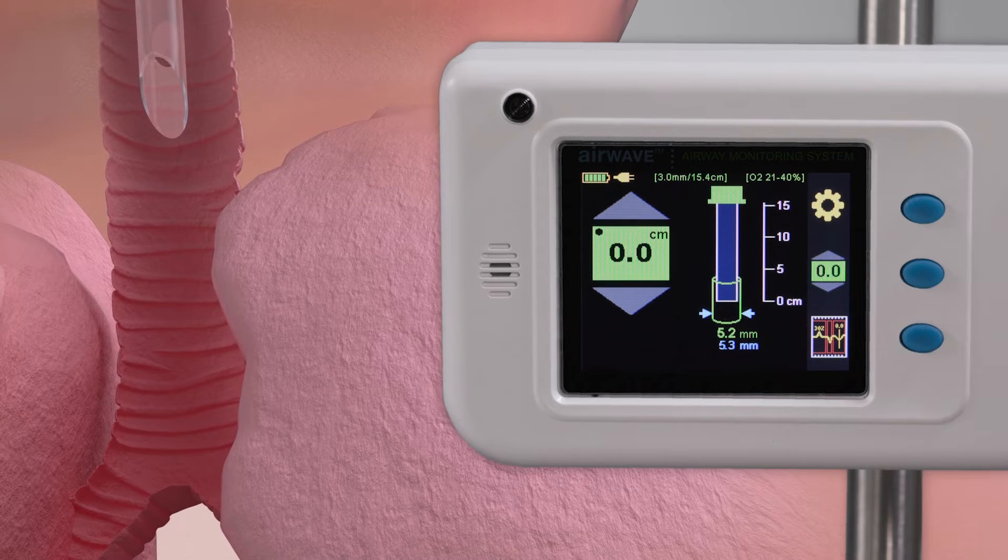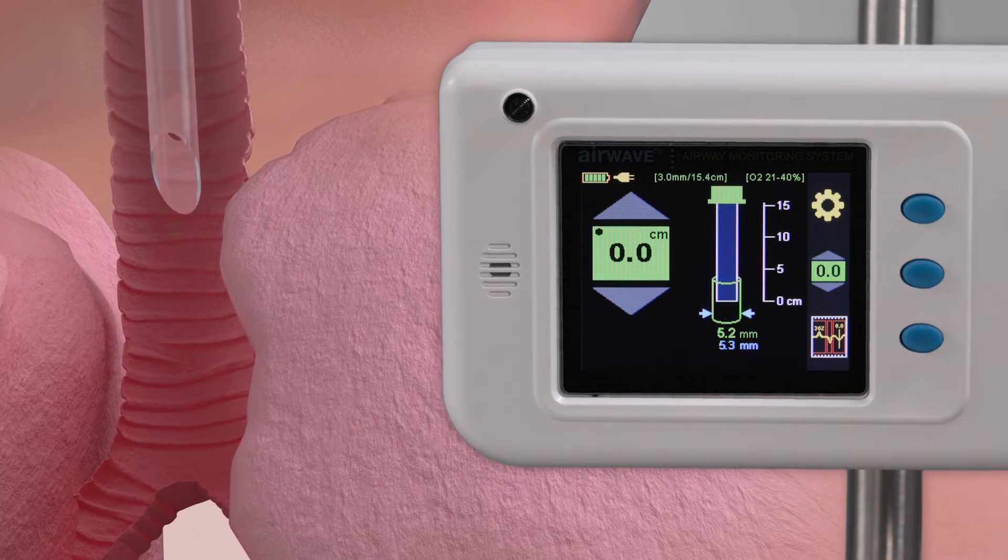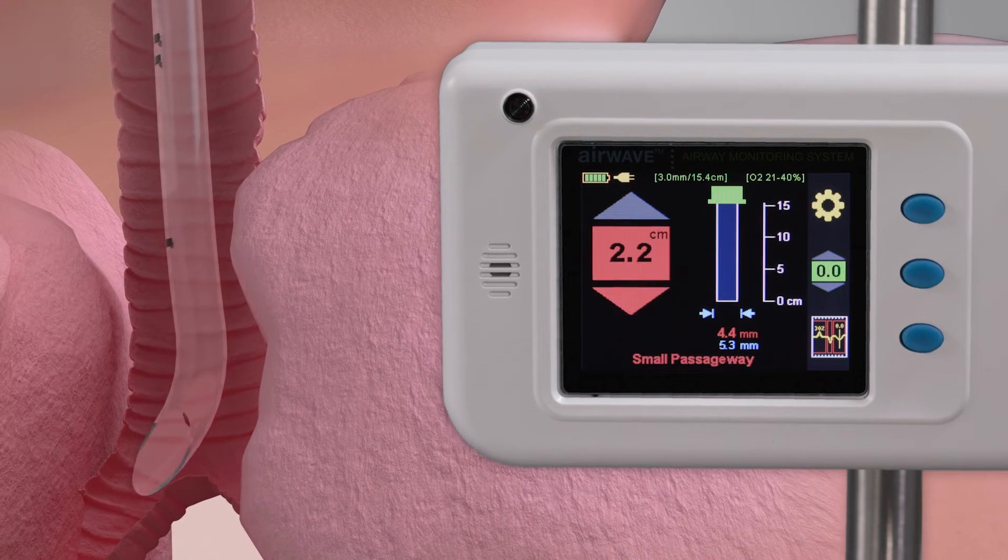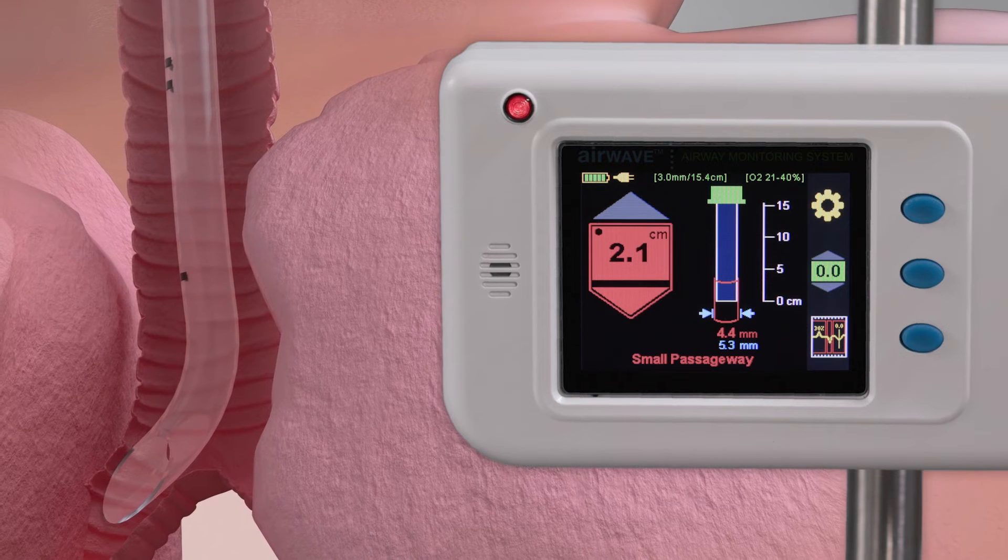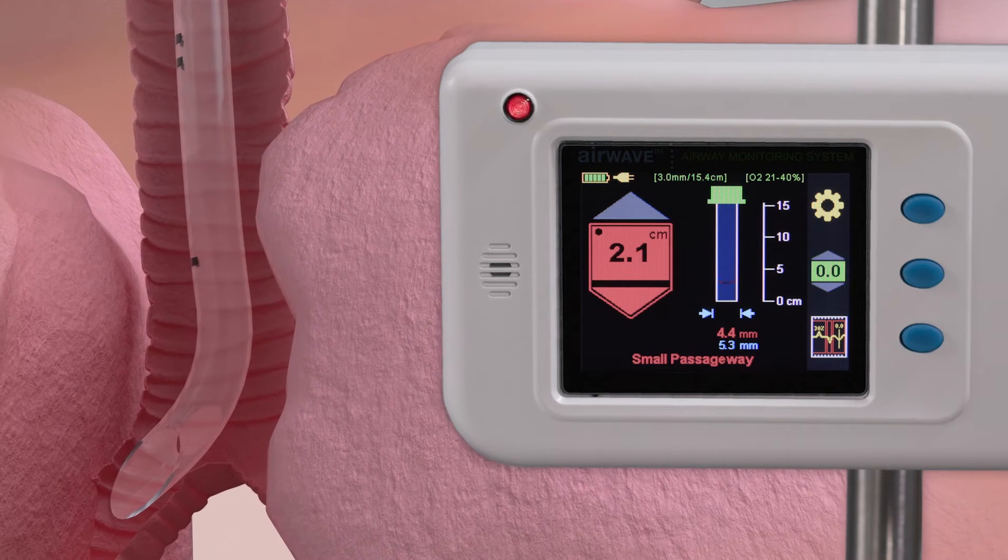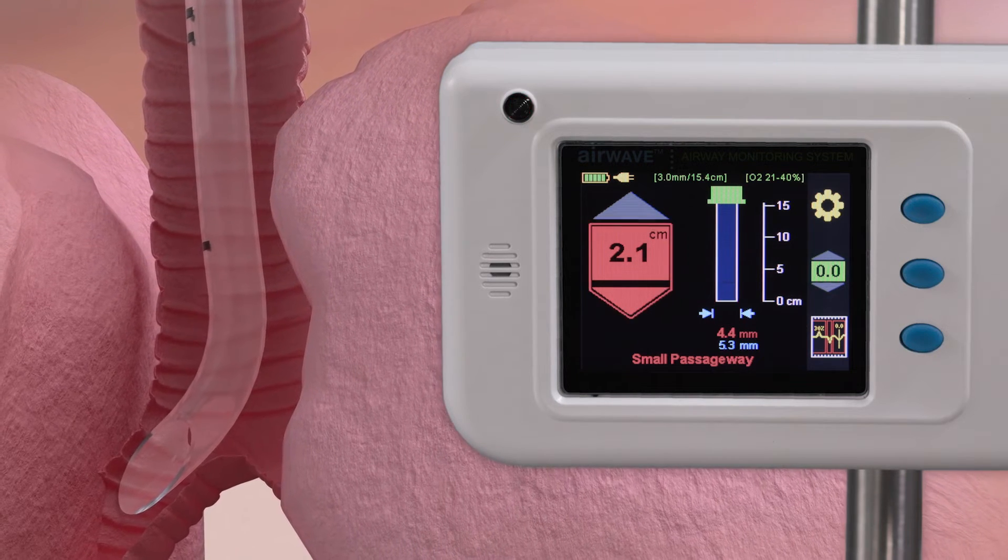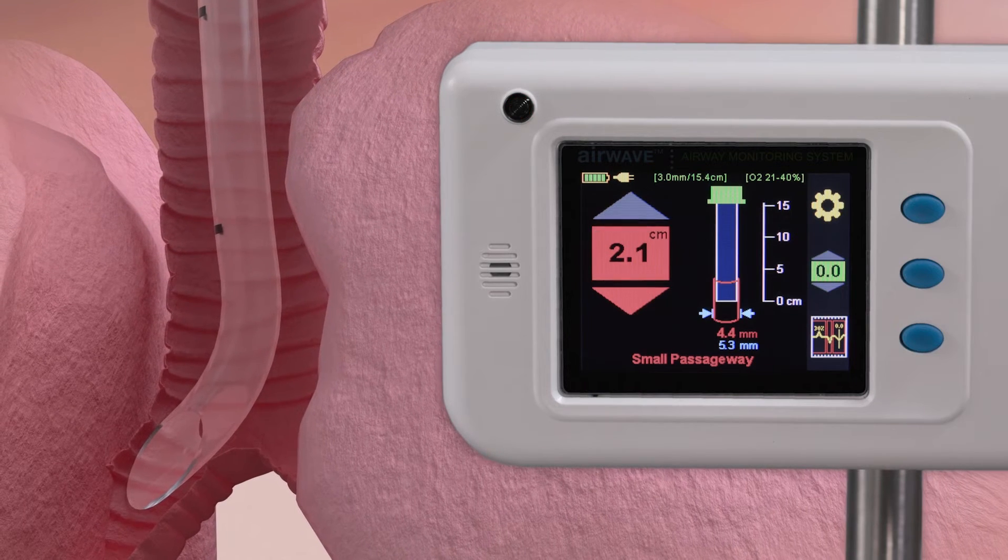The second continuous measure is the circumference of the patient's trachea at the tip of the endotracheal tube. This allows you to receive a notification if the tube has entered a smaller passageway, such as the right main bronchial stem.